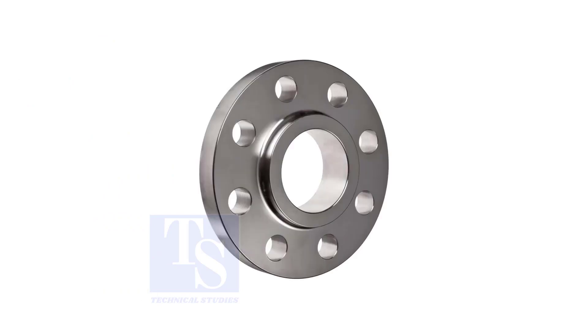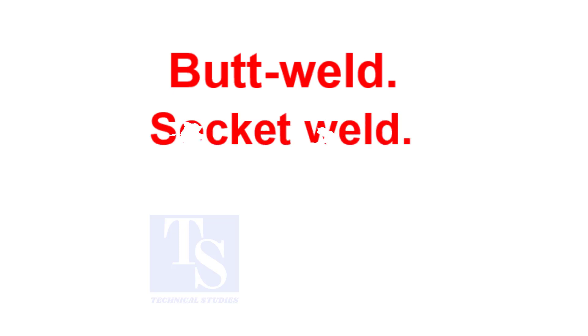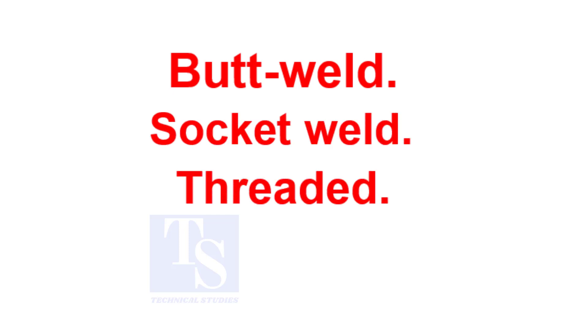Let us see the classifications according to the attachment. Mainly, there are three types of pipe-to-flange attachments: butt welded, socket welded, and threaded.